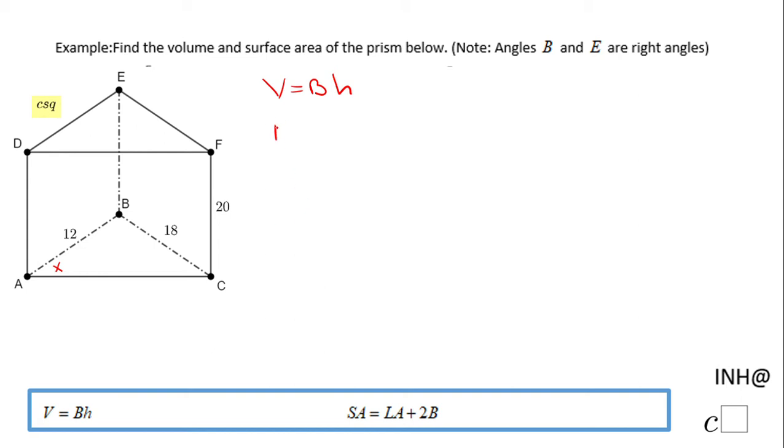Now, let's take a look at area of the base, and in this case, as I said, the base is a triangle. The area of a triangle is one-half times the base of the triangle times the height, and in this case, we notice angle B is a right angle, so that means this is the base of the triangle and this is the height, or vice versa, so we have 1/2 times 12 times 18.